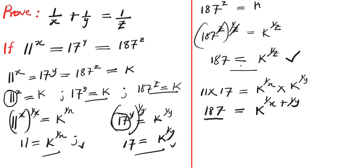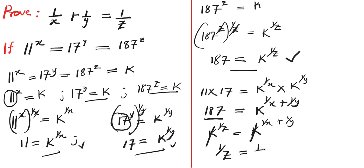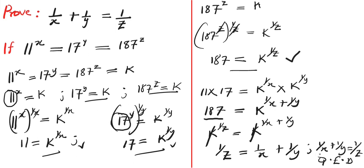Now we know that 187 equals k power 1 over c, so we substitute to get k power 1 over c equals k power 1 over x plus 1 over y. Since the bases k are the same, they cancel, and we now have 1 over c equals 1 over x plus 1 over y. Rearranging, we have 1 over x plus 1 over y equals 1 over c. QED.